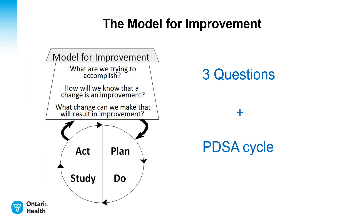No video on QI is complete without the model for improvement. What we are talking about today — change ideas and process measures — is the third question of the model, and how you test out your change ideas is using the Plan-Do-Study-Act (PDSA) cycle. You can see how the PDSA cycle is connected to that third question, and that it is a continuous cycle so that you are constantly testing and trying.